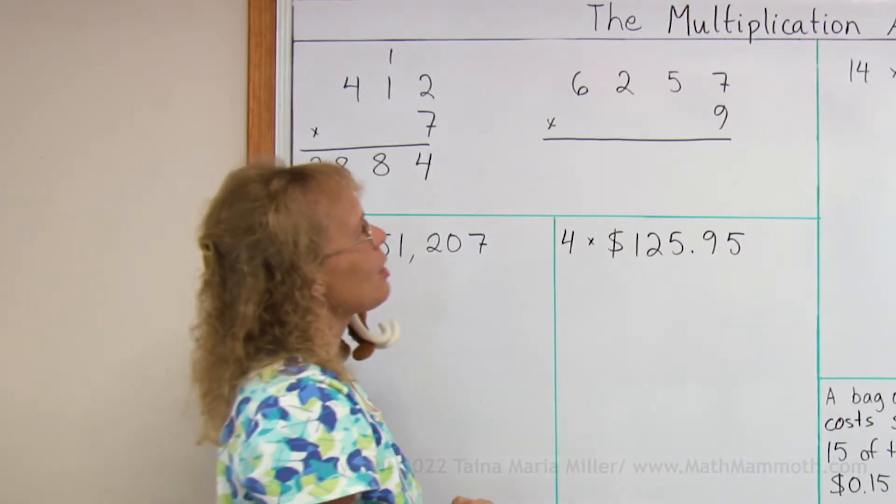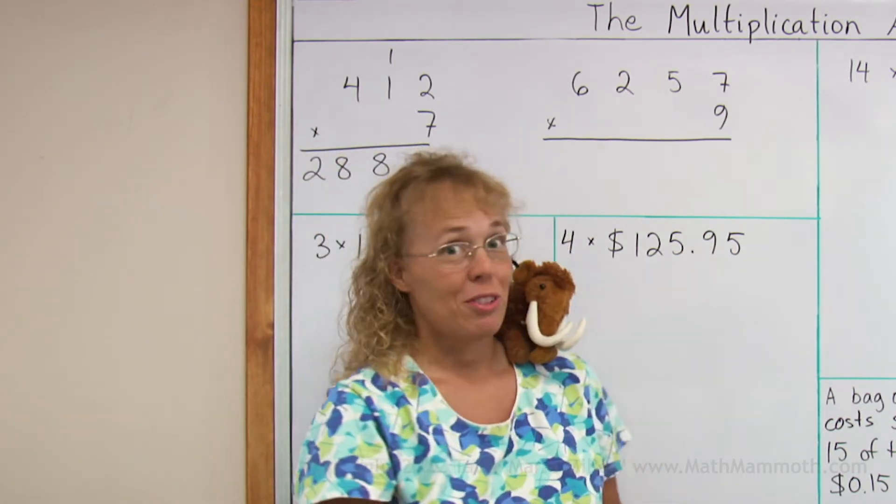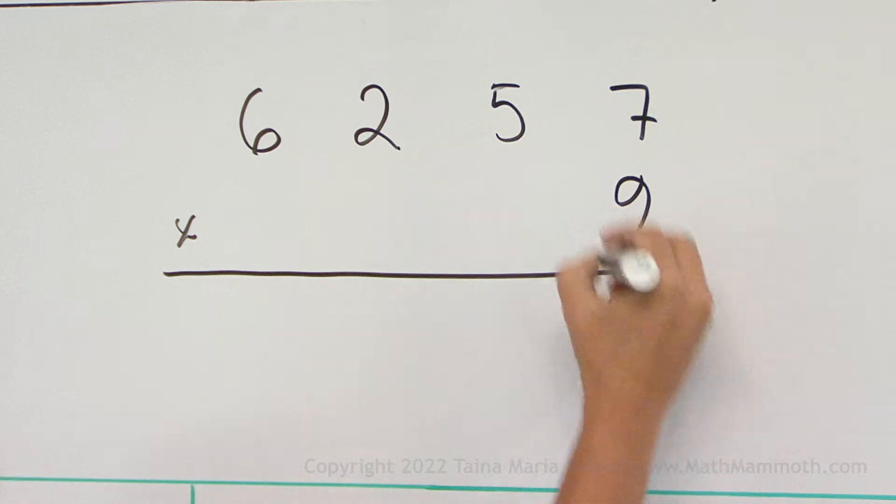Let's try a little bit longer number. And maybe you can do it before I do, right? 9 times 7, 63. 3 goes here. 6 is regrouped, 6 tens.